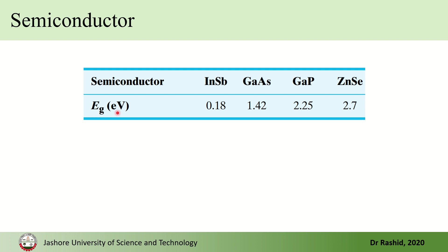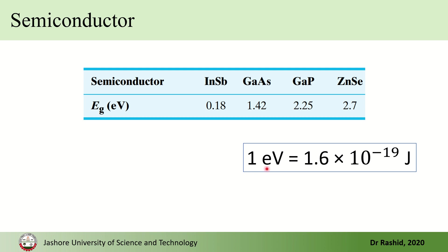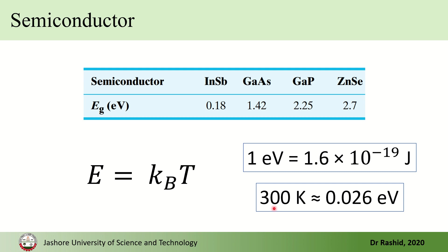Now, what is the electron volt? The electron volt is defined as the energy that an electron acquires when placed in a one-volt potential difference. Therefore one electron volt equals the charge of one electron multiplied by one volt, which is 1.6 × 10⁻¹⁹ joules. This is a very small number, so we can use the equation E = kT, where k is the Boltzmann constant and T is the temperature in Kelvin, to convert temperature into energy.